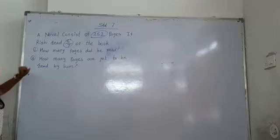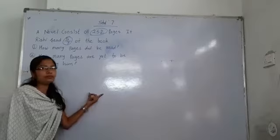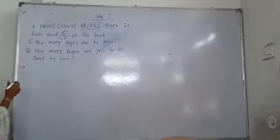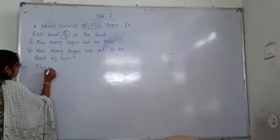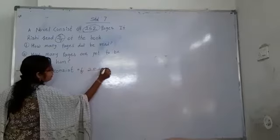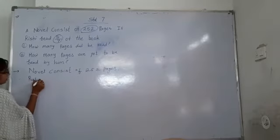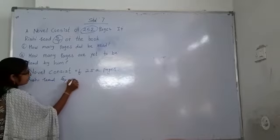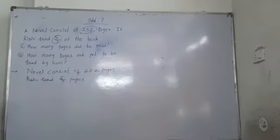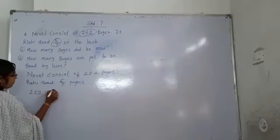So first we solve the first question: how many pages did he read? This is a word problem, so we will solve using wording. Novel consists of 252 pages, and Rishi read 5 by 7 pages. We will write our equation using fraction: 252 into 5 by 7.